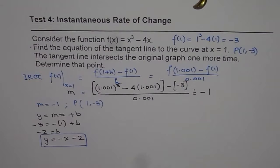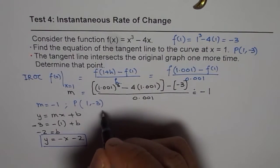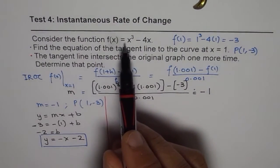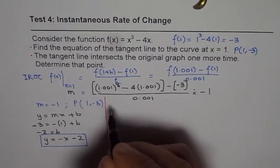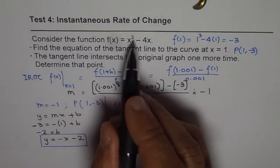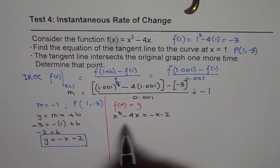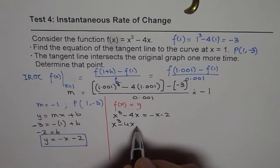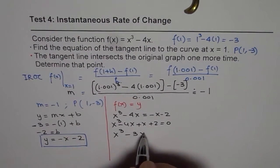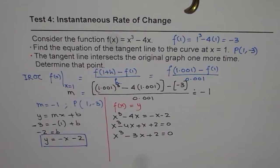Now, let's do the second part of the question, which is, the tangent line intersects original graph one more time, determine that point. So, let's figure out that point. So, if this tangent line intersects the graph, that means both values should be same. f(x) and y values should be same. So, basically, we will now equate f(x) equals y and find the point of intersection. So, we have f(x) as x cubed minus 4x. That should be equal to y, which is minus x minus 2. Let's bring them together. We get x cubed minus 4x plus x plus 2 equals 0, which could be written as x cubed minus 3x plus 2 equals 0. So, this is a cubic equation, and to solve for this cubic equation, we should factor.